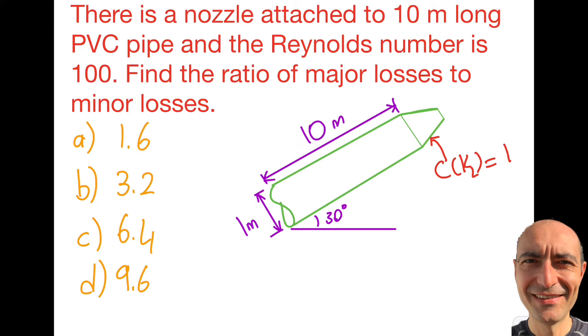And I gave you that this is a PVC pipe and I gave you the Reynolds number of it to be 100.